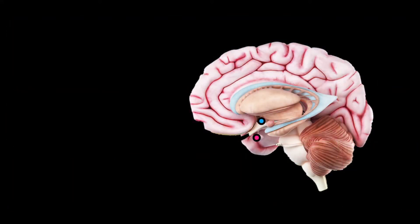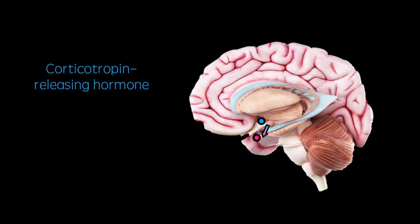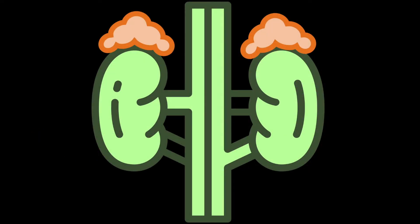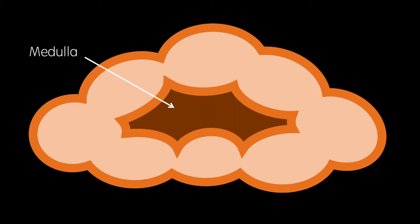The hypothalamus releases corticotropin-releasing hormone which acts on the anterior pituitary to release adrenocorticotropic hormone. This hormone is secreted into the blood which transports it to the adrenal glands which sit just above the kidneys. The adrenal glands are made up of a medulla which secretes adrenaline and noradrenaline, surrounded by the cortex which secretes cortisol.